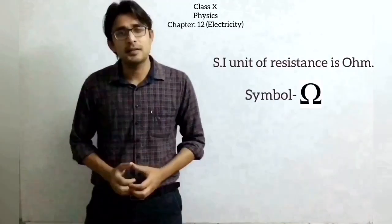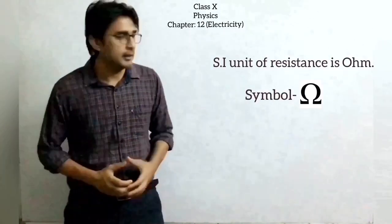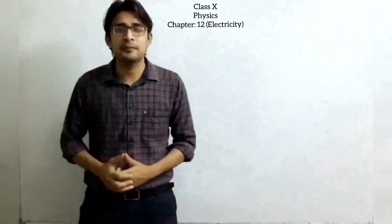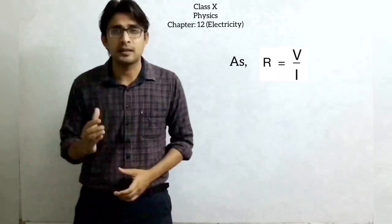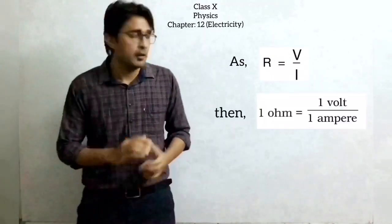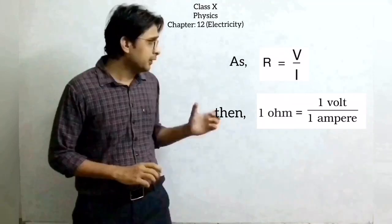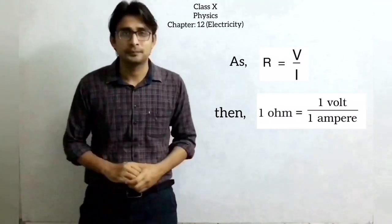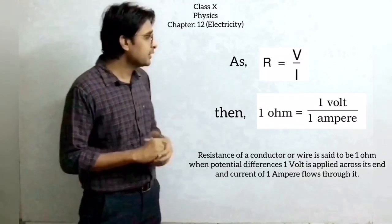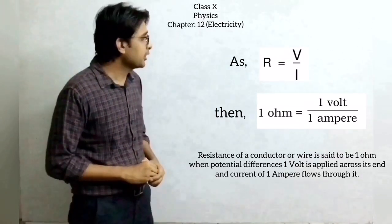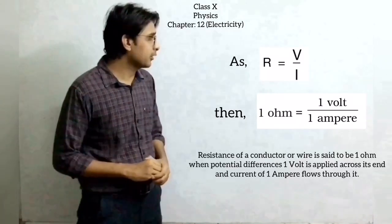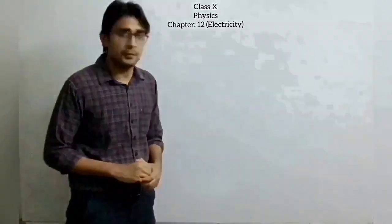The SI unit of resistance is Ohm, represented by the symbol Ω. Now we define 1 Ohm: since R = V / I, 1 Ohm equals 1 Volt per 1 Ampere. The resistance of a conductor is said to be 1 Ohm when a potential difference of 1 Volt is applied across its ends and a current of 1 Ampere flows through it. I hope all of you have understood Ohm's law. Please revise it. Thank you and have a nice day.